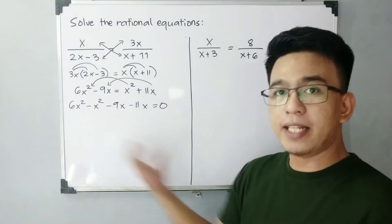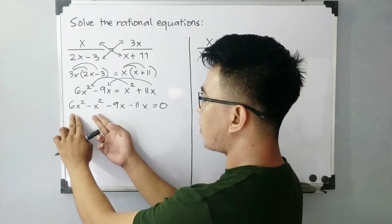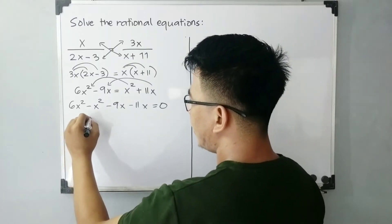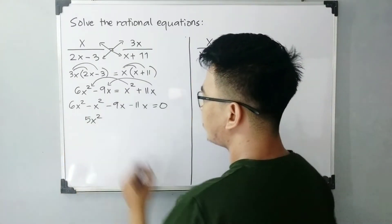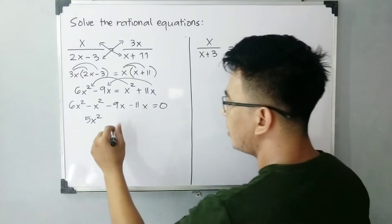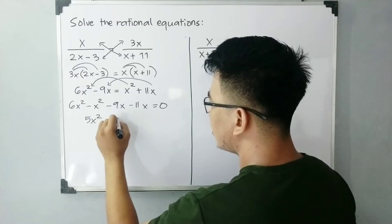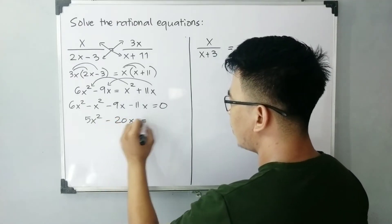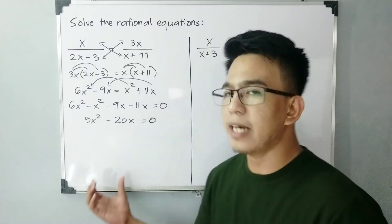So we have negative or minus 11x is equal to 0. And then simplifying or combining like terms, 6x squared minus x squared, that is 5x squared. This one, it will give us minus 20x is equal to 0. And as you can see, guys, we have now a quadratic equation in standard form.